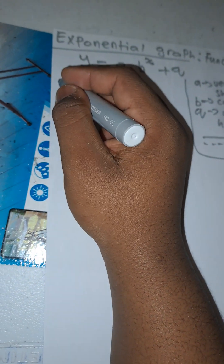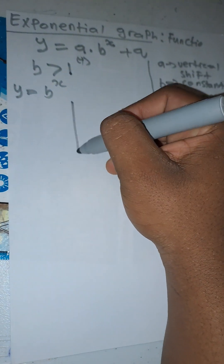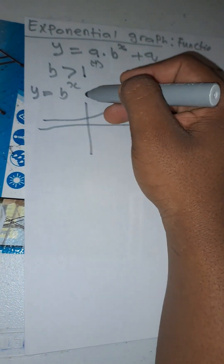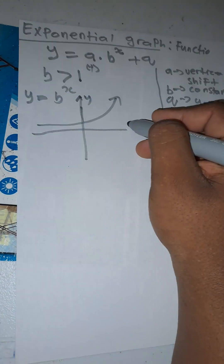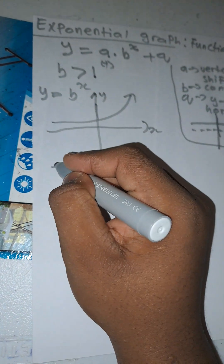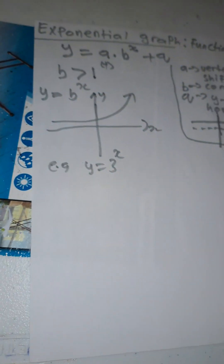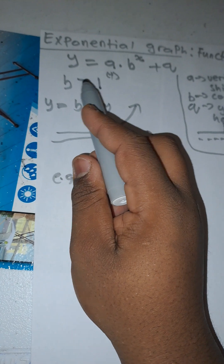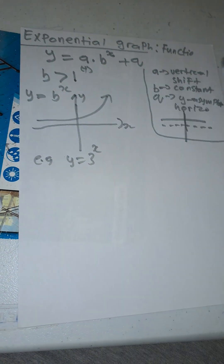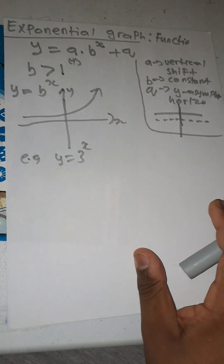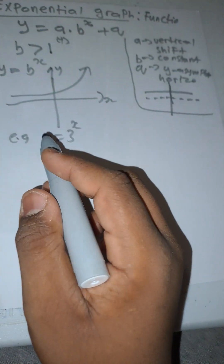We have two types of graphs. The first is where b is greater than one — also called an increasing function. For example, y = b^x with b greater than one produces an increasing graph. So when b is greater than one, it can be two, three, or any value greater than one.